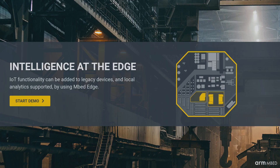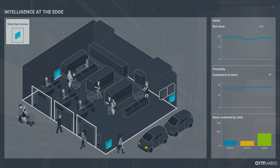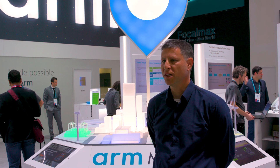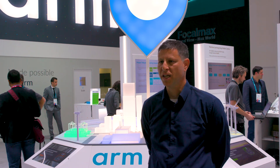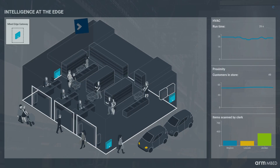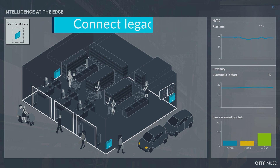The retail and industrial scene shows a factory and a retail outlet. In such environments, devices are historically not connected to the cloud, but by using Embed Edge you can easily connect such devices and stream data from legacy devices all the way to the cloud.